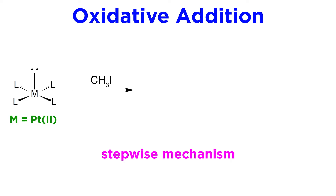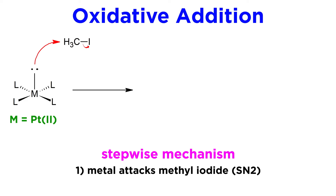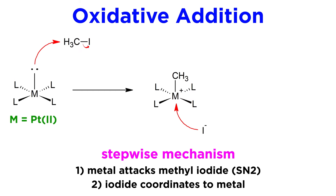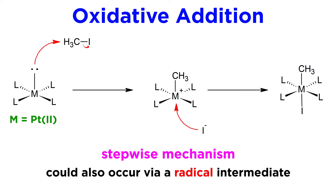An example of this is as follows, with this platinum(II) complex, which reacts with methyl iodide. The platinum atom attacks the methyl group yielding an SN2-like transition state, and kicks off the iodide, so now there is a methyl ligand, and the complex has a 1+ charge. Then the iodide will coordinate, returning the complex to the original charge. This could also operate via a radical intermediate instead of a cation.